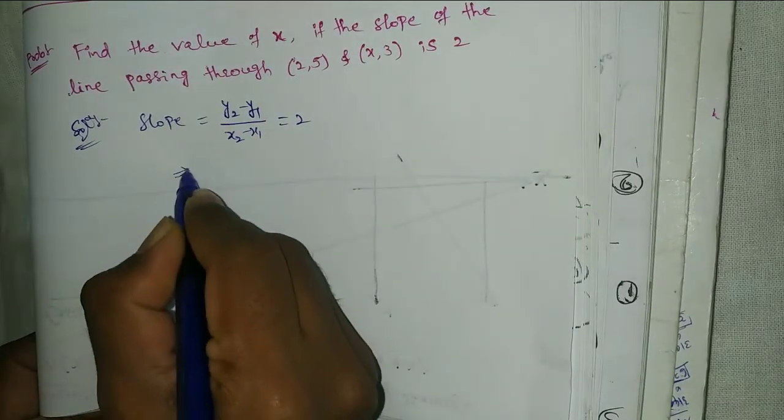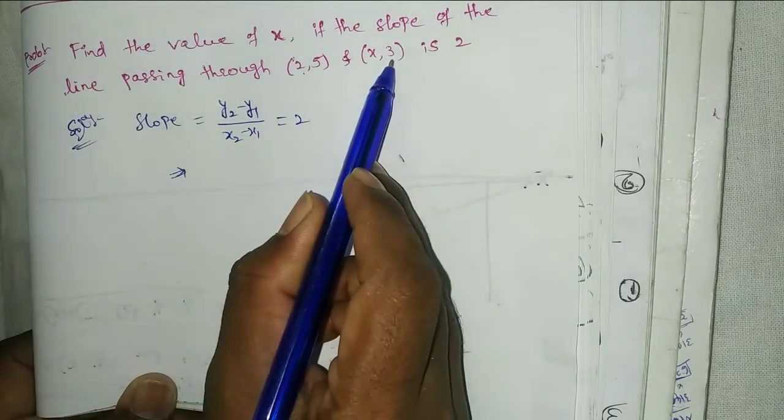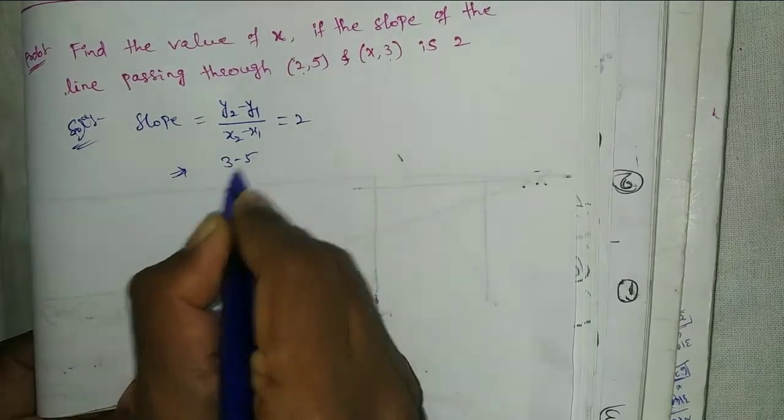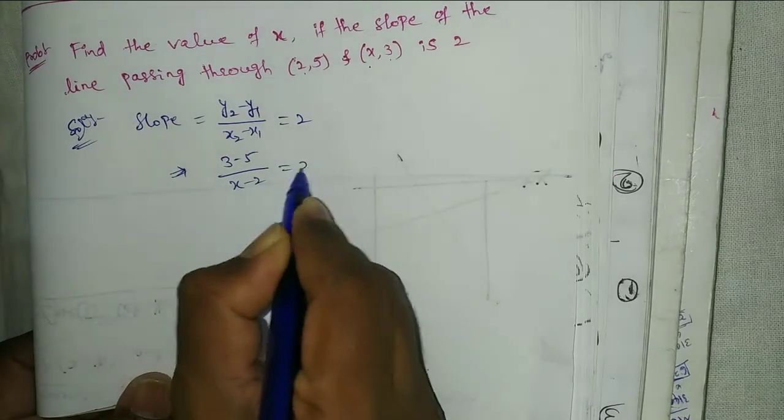Okay, that implies see here, x1, y1, x2, y2. So y2 minus y1, 3 minus 5 by x minus 2 equal 2.